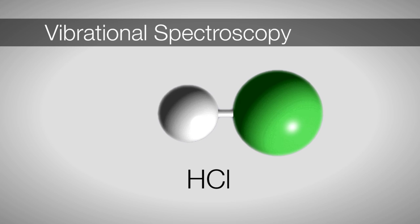We can envision HCl as two simple spheres connected by a spring. Here, chlorine is green and hydrogen is white. At first glance, chlorine appears to be stationary because it's much more massive than hydrogen, but both atoms are in fact moving during the vibration.